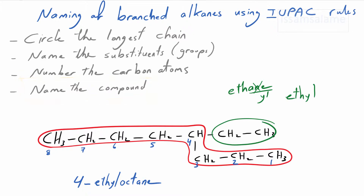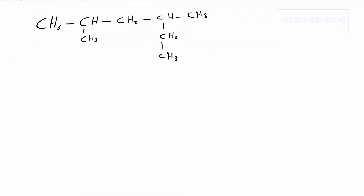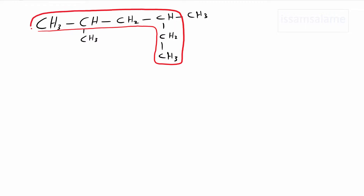Let's have another example. The maximum number of carbon atoms I can join in series is six, so the longest chain is hexane. We have two groups — each one is made of one carbon atom. We borrow the name from methane and end it with '-yl', so each group is called methyl. We have two methyls here.